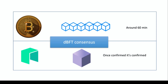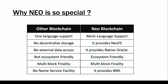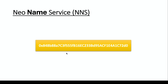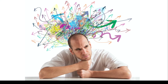NEO achieves this using dBFT — Delegated Byzantine Fault Tolerance consensus. The sixth difference is that other blockchains do not have a name service, while NEO blockchain provides NNS — the NEO Name Service. If I ask you to memorize a long alphanumeric public key, the answer is obviously no — you can't remember it. Even a bank account number is easier to remember than a blockchain public key or transaction ID.